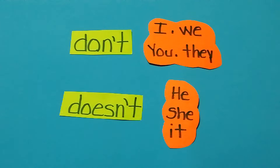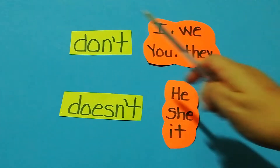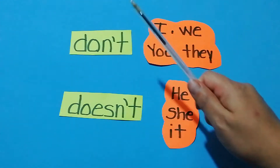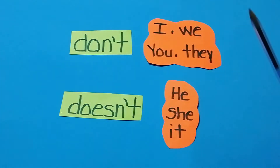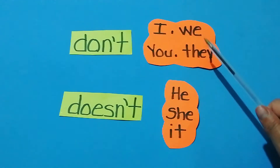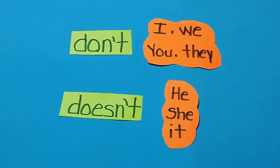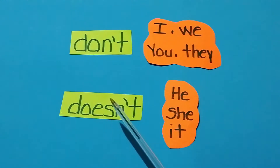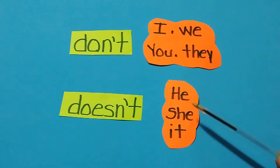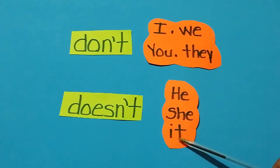How can we make this sentence in negative form? We use don't to make negative sentences when the subject is I, we, you, and they. We use doesn't to make a negative sentence when the subject is he, she, or it.